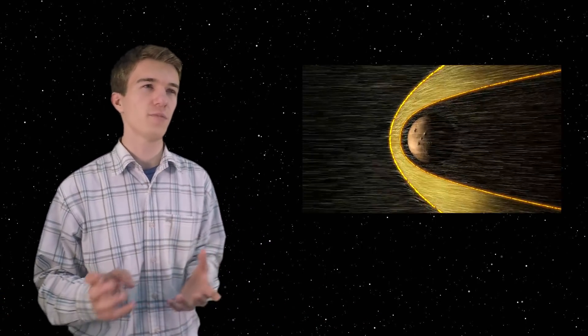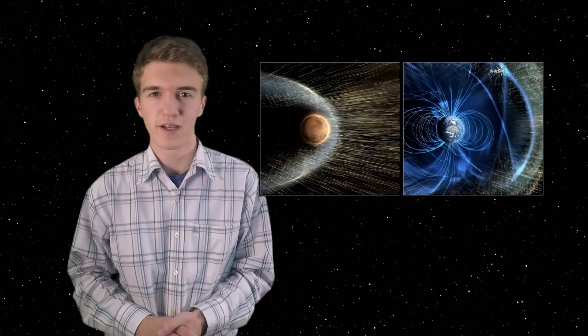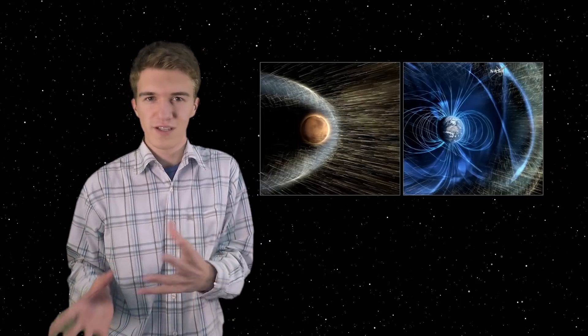And that's the reason why Mars loses its atmosphere. What makes Mars different from Earth? Why does Earth have a magnetic sphere and magnetic field and Mars doesn't? What is the difference?